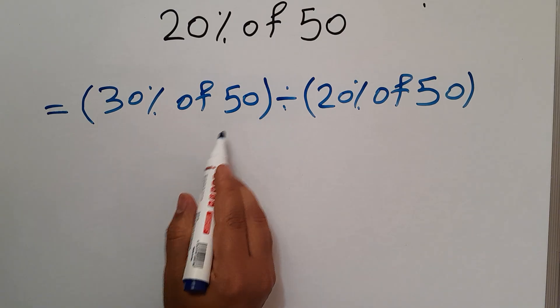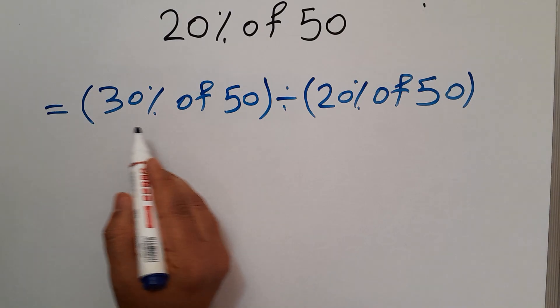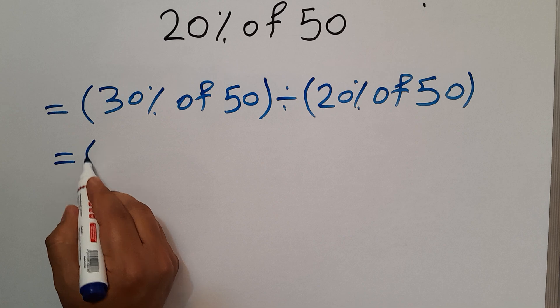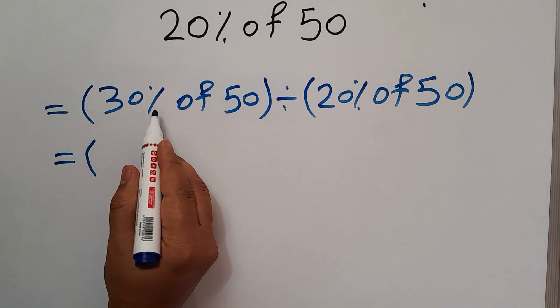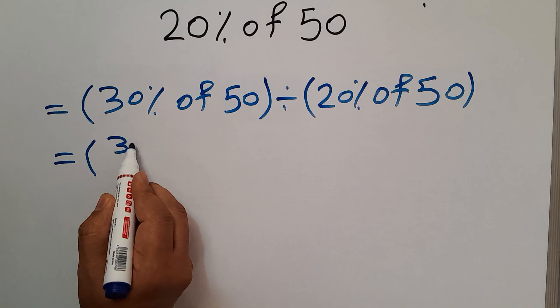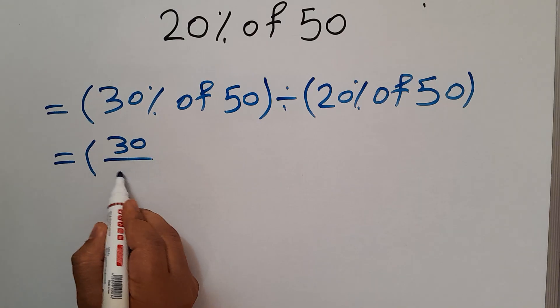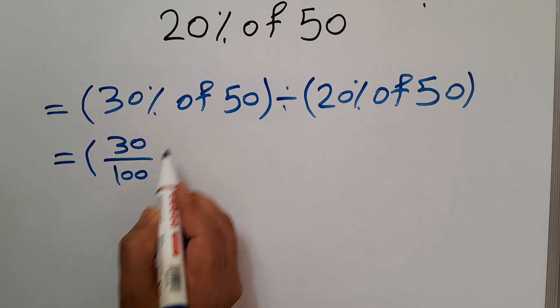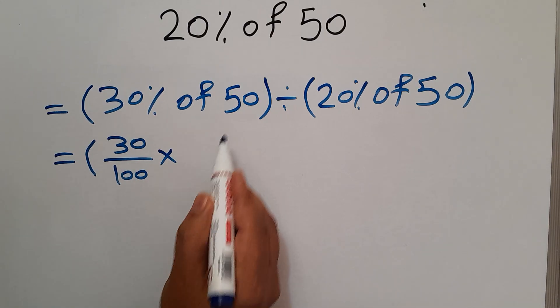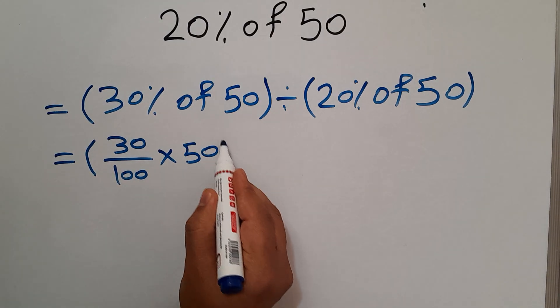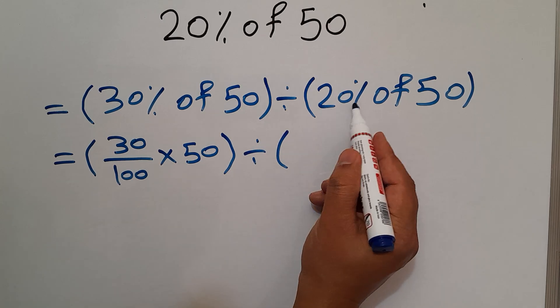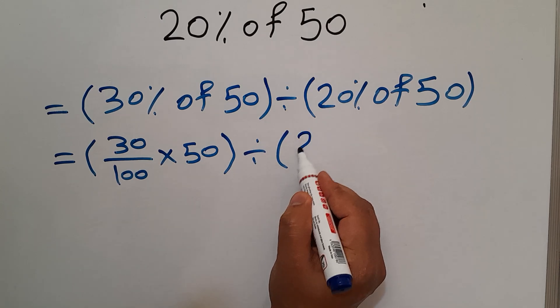Here inside these parentheses we have 30% of 50. So we have parentheses 30%, and instead of 30% we can write 30 over 100. Of means multiply, so times 50. Divided by parentheses: instead of 20% we can write 20 over 100, of means times 50.